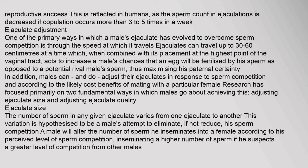One of the primary ways a male's ejaculate has evolved to overcome sperm competition is through the speed at which it travels. Ejaculates can travel up to 30 to 60 centimeters at a time, which, combined with placement at the highest point of the vaginal tract, increases a male's chances that an egg will be fertilized by his sperm rather than a rival's. Males can and do adjust their ejaculates in response to sperm competition and according to the likely cost-benefits of mating with a particular female.